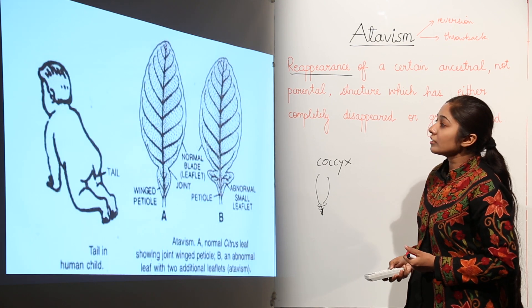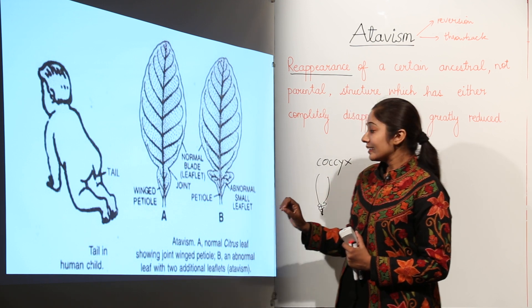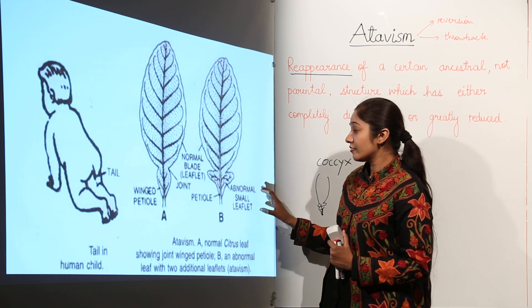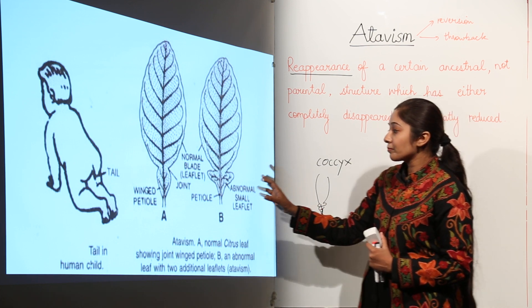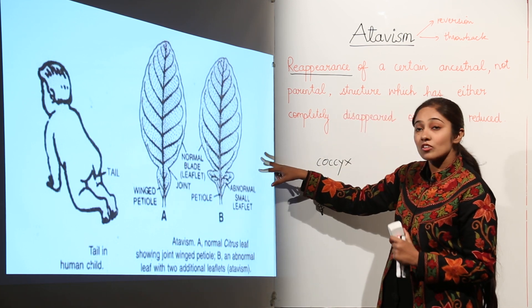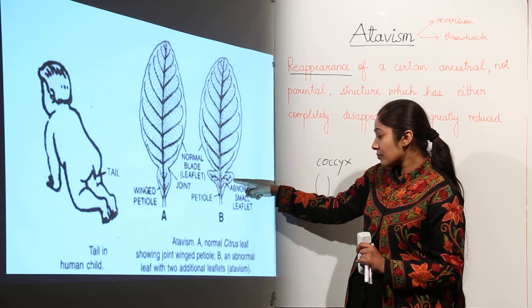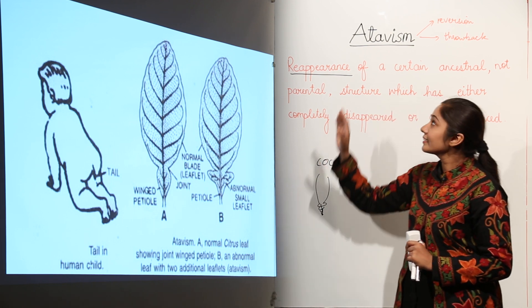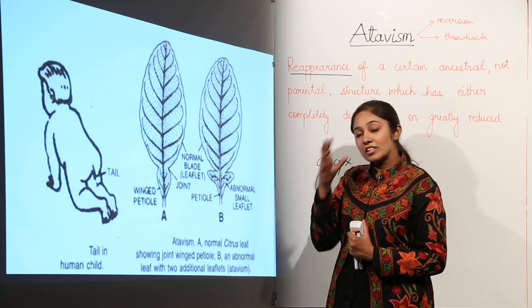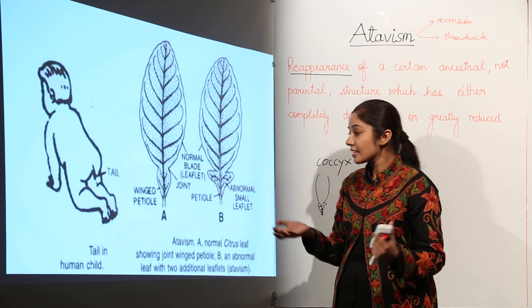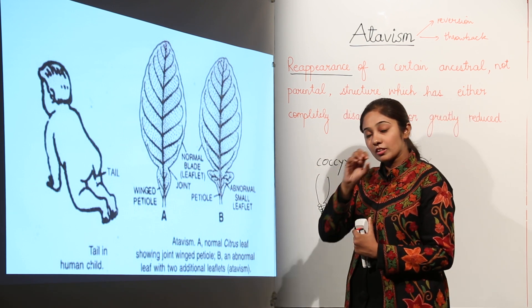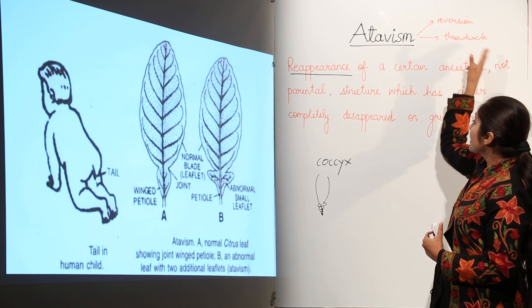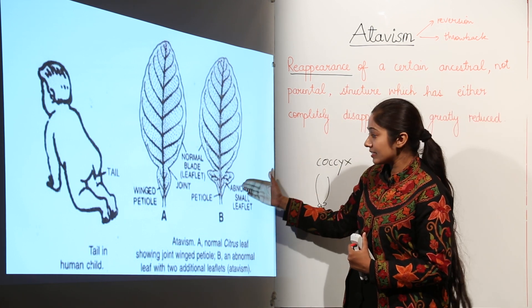Plants also show atavism. For example, I have taken a citrus leaf. This is a normal citrus leaf showing a winged petiole. But this other leaf is not normal because it is showing some additional leaflets. The presence of these additional leaflets is an example of atavism, because it is thought that the citrus leaf was originally trifoliate, but due to evolution over time it has become the simpler form we see today. Due to the reappearance of ancestral characters, some citrus leaves still develop this extra structure.